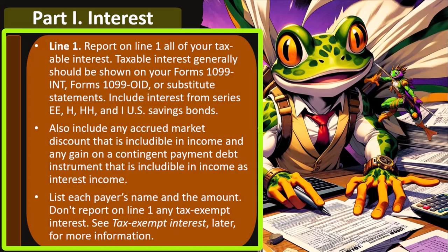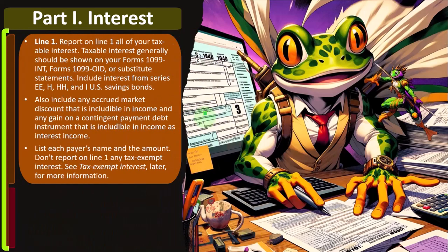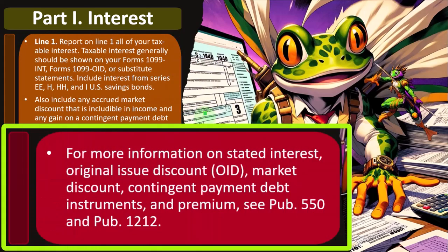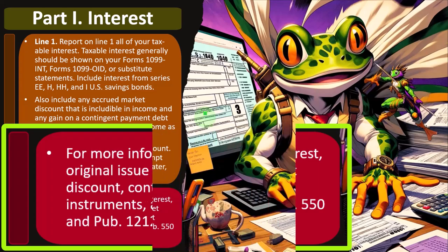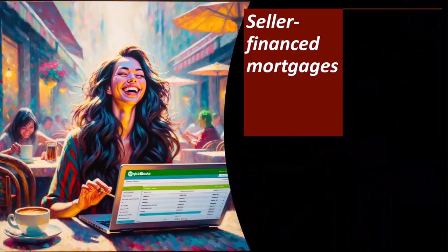List each payer's name and the amount. Do not report on line one any tax-exempt interest — see the tax-exempt interest section for more information. For more information on stated interest, original issue discount (OID), market discount, contingent payment debt instruments, and premiums, see Publication 550 and Publication 1212.